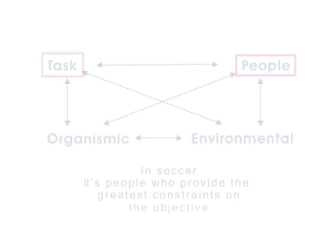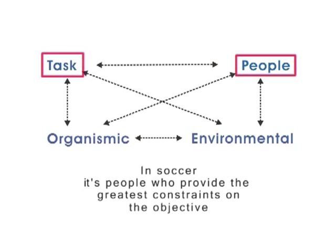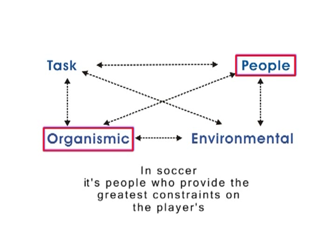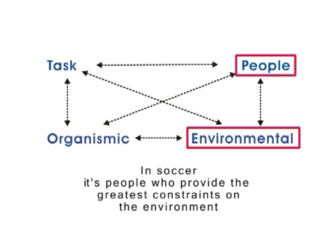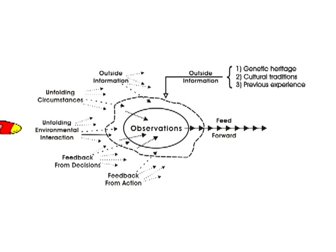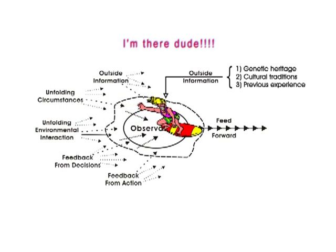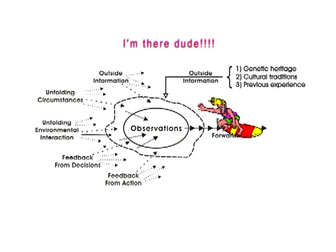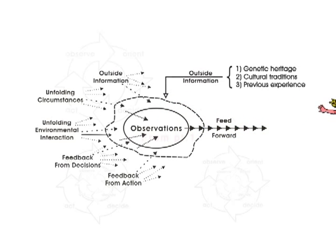We know from experience that it's people — opponents, teammates, coaches, trainers, and so on — that provide the greatest resistance and help, both physically and informationally, in learning and playing the game. Once you accept people as a major constraint, you need to include them in the data and information flow from the environment.